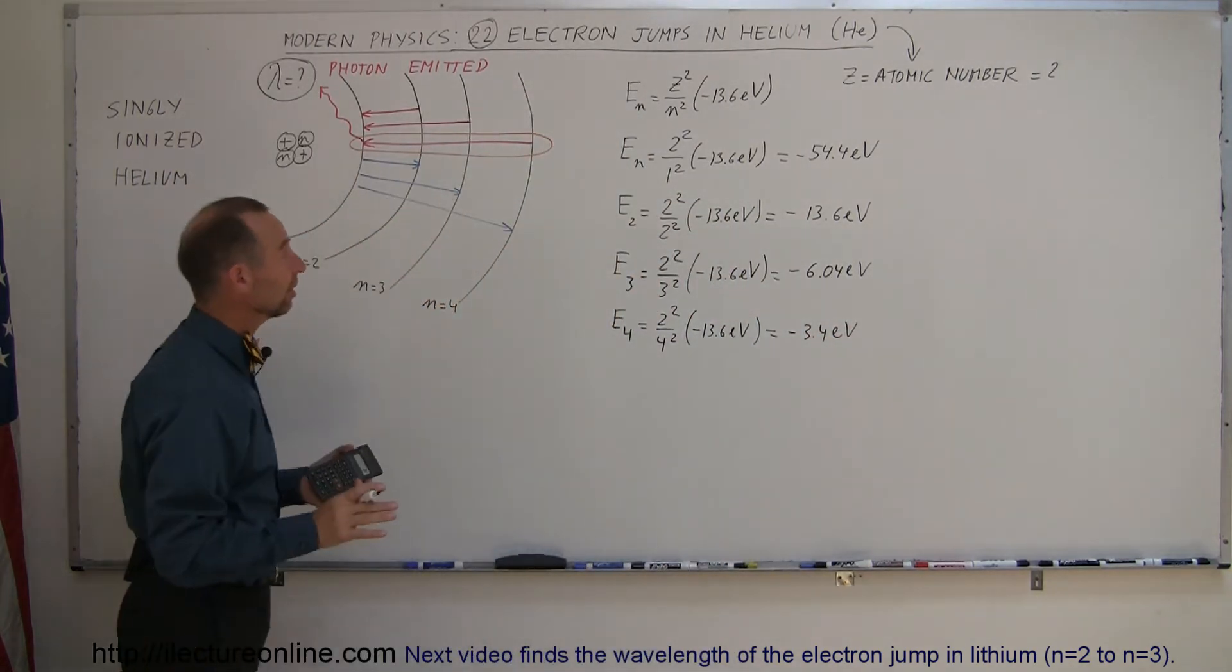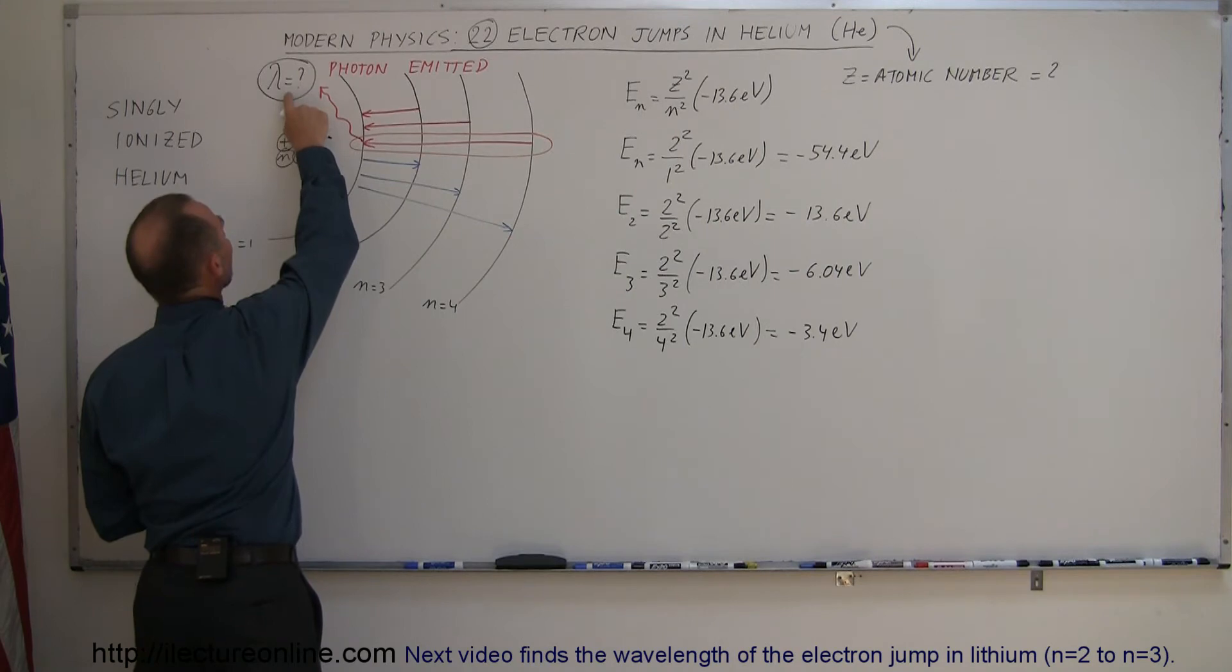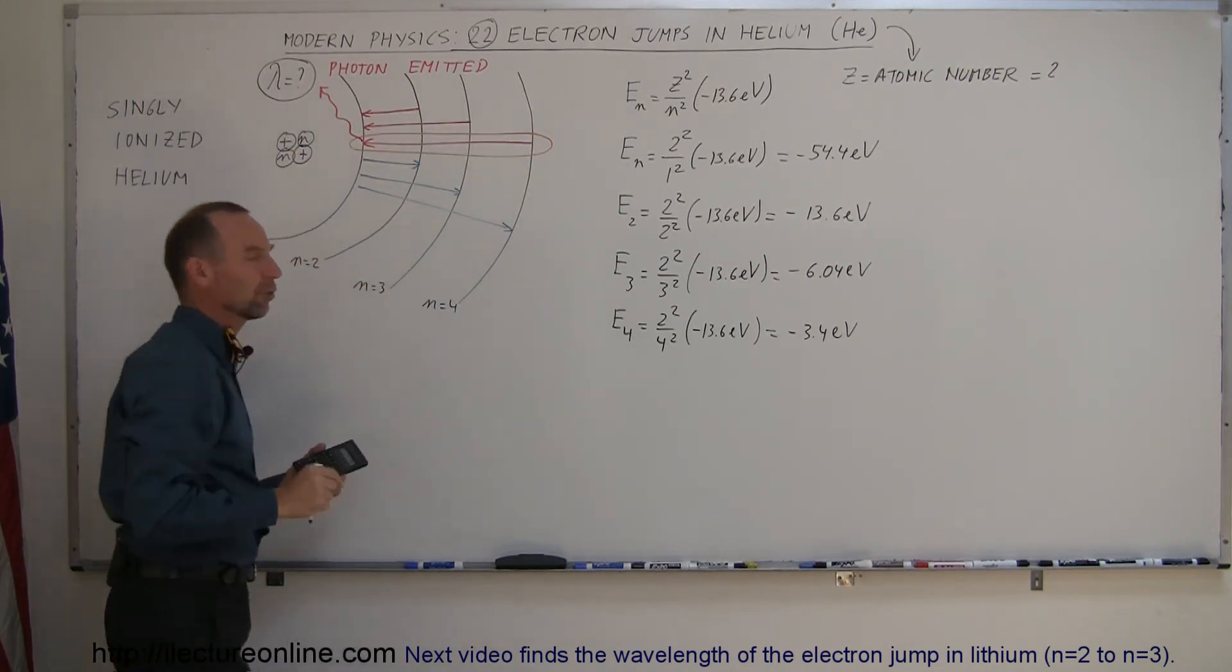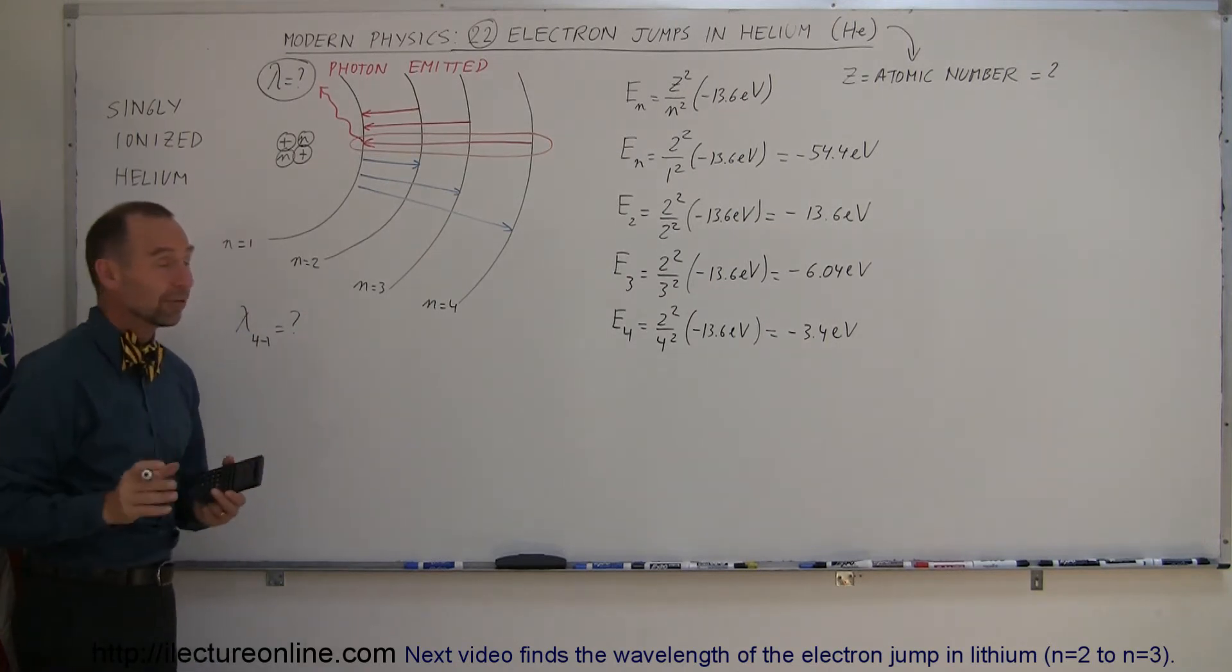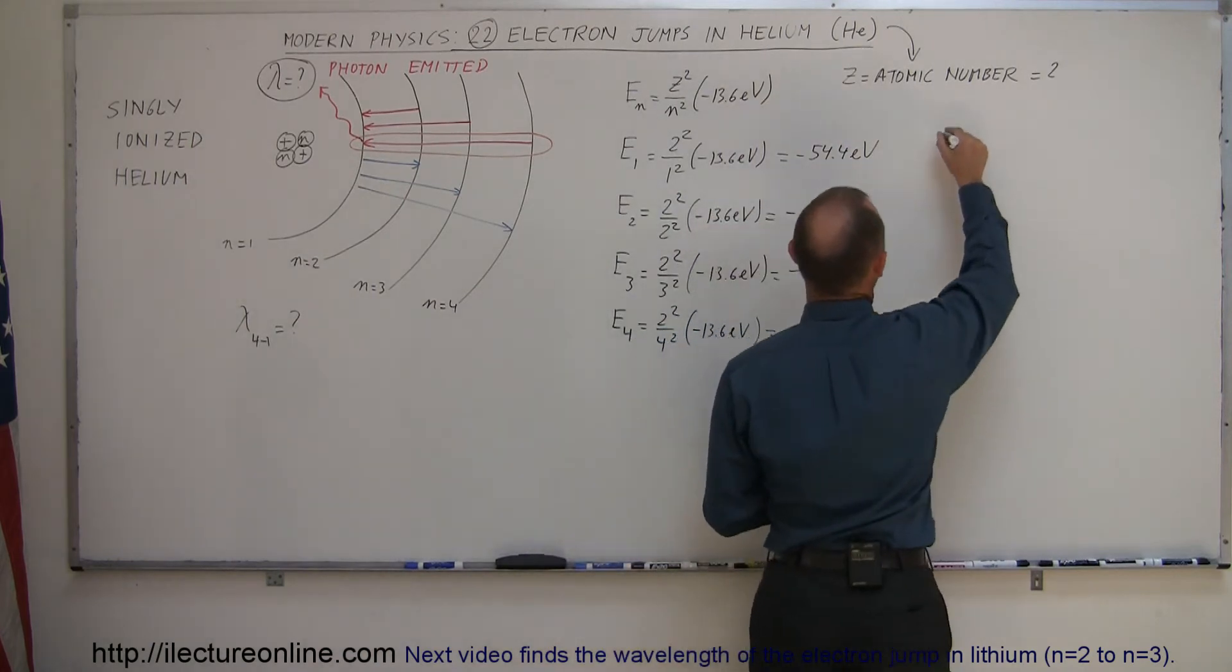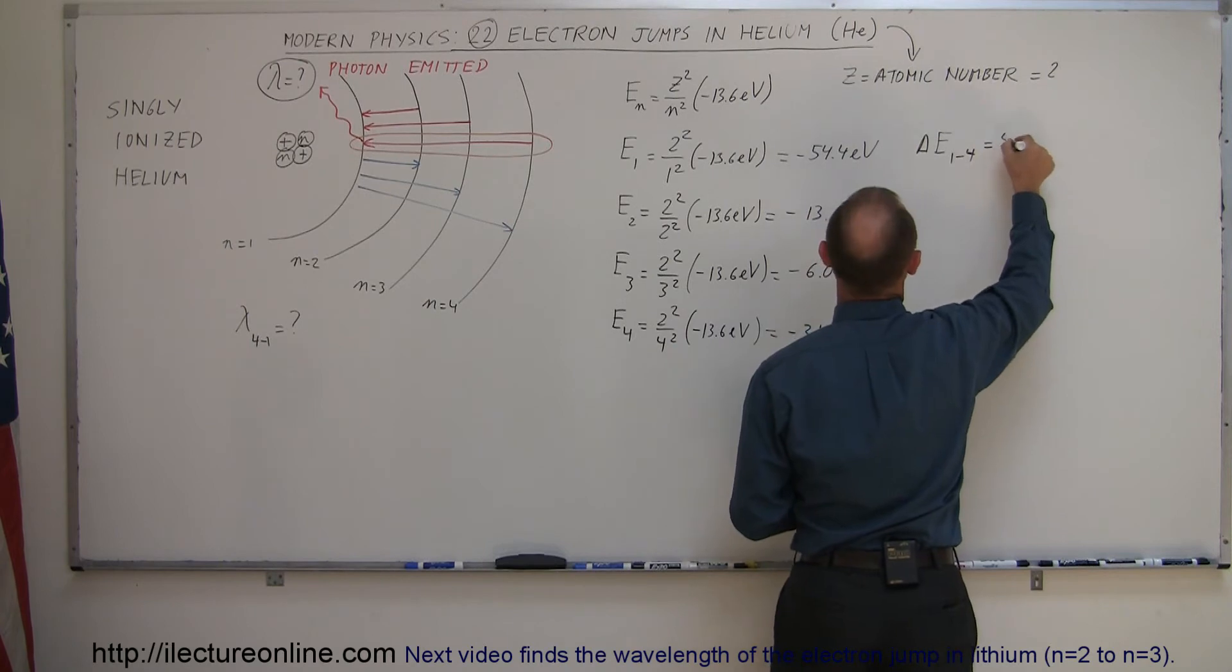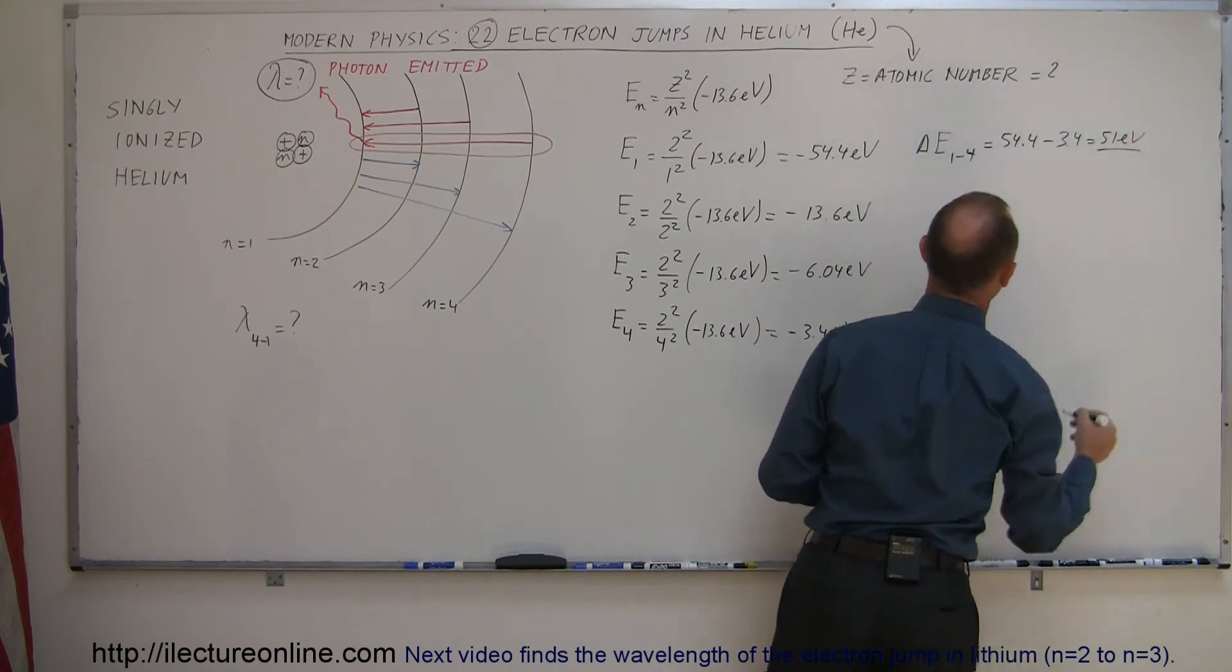So now that we know the energies of the first four levels in helium, what if we try to find the wavelength of the photon released when an electron jumps from the fourth level down to the first level? So what would be the wavelength? So wavelength for the 4-to-1 jump is equal to question mark. Well, then we need to find the energy difference between those two. So E from 1 to 4, the energy difference, delta E, is equal to 54.4 minus 3.4, which is 51 electron volts.